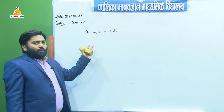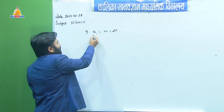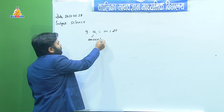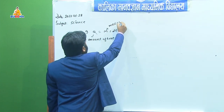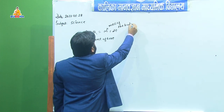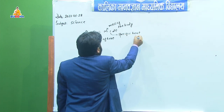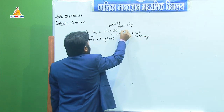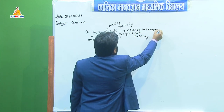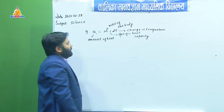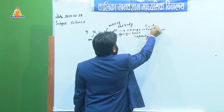To prove this we must know what these letters indicate. Q is the amount of heat, M is the mass of the body, S is the specific heat capacity, and DT is the change in temperature. Change in temperature means final temperature minus initial temperature, so DT = T2 − T1.